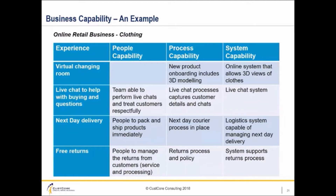For example, for the virtual changing room, there's not a lot of people capability required. But in terms of process capability, for new product onboarding they have to create an adaptive 3D model of the products so that it can be included in the virtual changing room. And the system has to include an online system that allows 3D views of clothes.